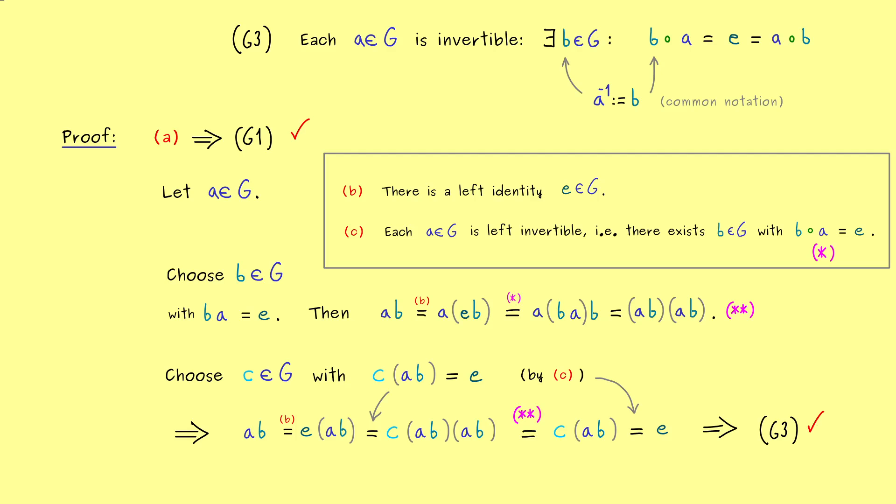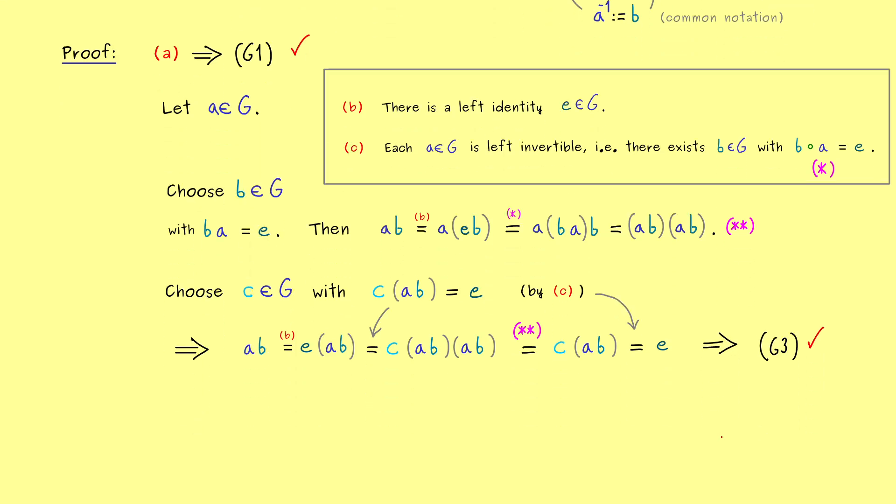So the only missing thing is G2, that says that E is an identity element. This means we have to check if E is also right neutral. This means AE here should be equal to A as well. And now we have two options. So let's choose the first one. Let's replace E with BA. And then the associativity G1 lets us change the parenthesis. So we have AB and then A. However, now from the calculation before, we know that AB is already equal to E. So we have EA, but it is given that E is a left neutral element, so we get out A. And again, A was arbitrarily chosen, so these equations hold for every A in G. In other words, E is indeed an identity element for G.